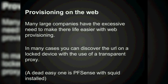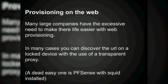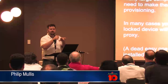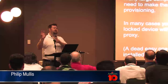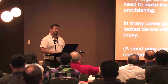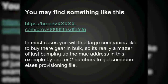Web provisioning is a lot easier because you don't have to be local. In many cases you can discover a provisioning URL on a locked device using a transparent proxy. Squid can be used as a transparent proxy. pfSense is a fantastic firewall with a SIP proxy built in and installable packages including SIP proxy and reporting. Set it up in transparent mode — if you get a device from a carrier with web provisioning, put it behind pfSense and you'll be able to see the address it's trying to access.